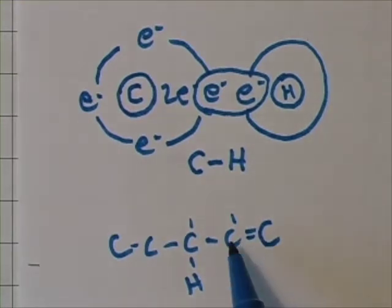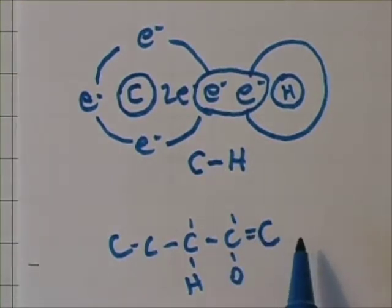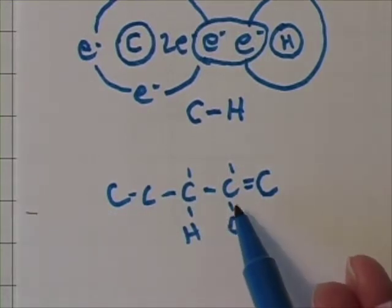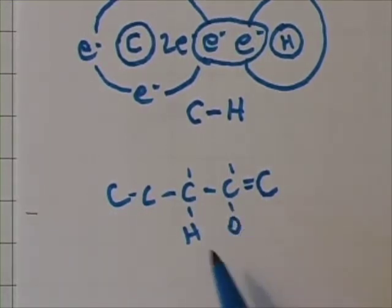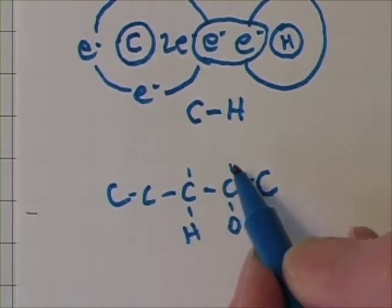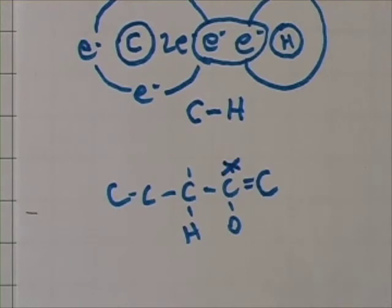Therefore, if this carbon forms a double bond with another carbon, and it forms a bond with this oxygen and a bond with this carbon, it's used up its outer electrons. So this bond would not exist. Now, as you practice with this, you'll see this is not really a very complicated idea.